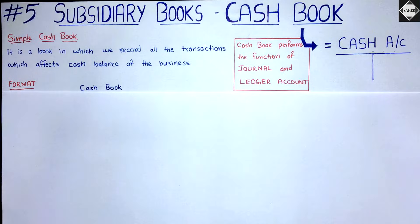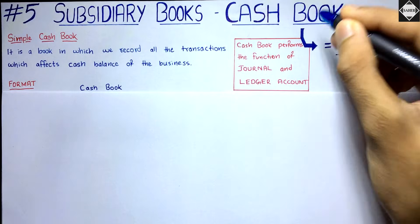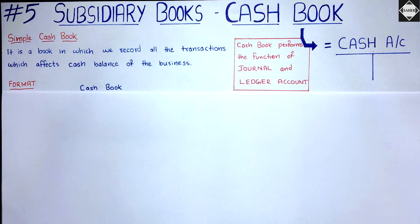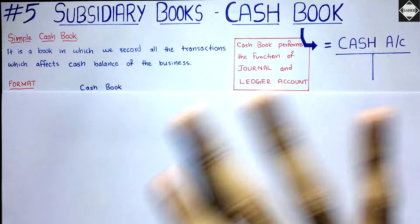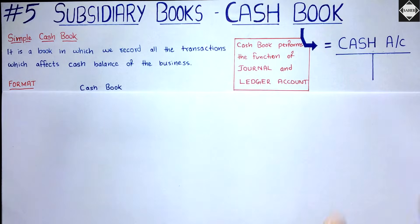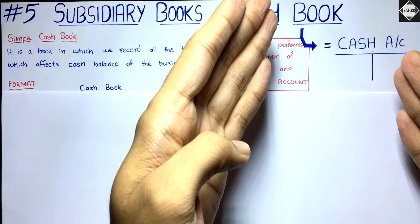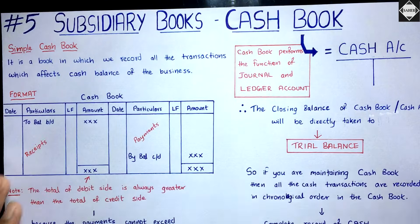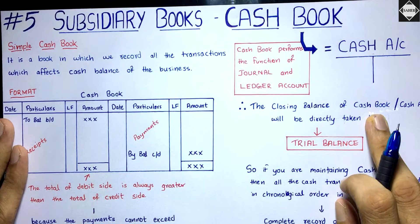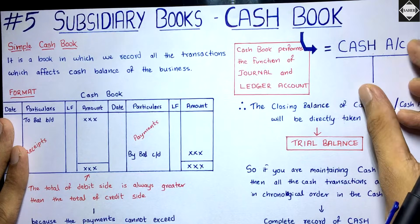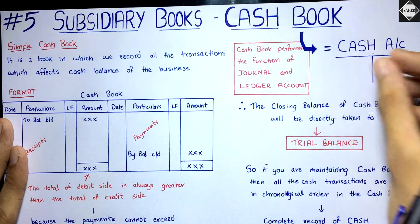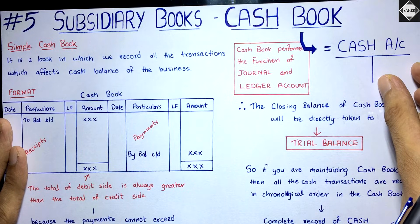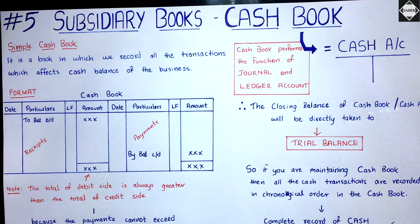The cashbook serves two purposes: it serves the purpose of a journal (subsidiary book) as well as a ledger account. So if you are maintaining a cashbook in your business, all the cash transactions are recorded in chronological order. All cash receipts and payments are recorded in the cashbook, so you do not need to prepare a separate cash account — because it is exactly similar. The closing balance of the cashbook will have the same debit balance as the cash account.